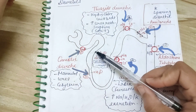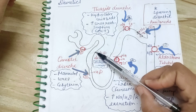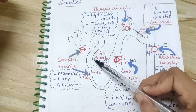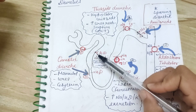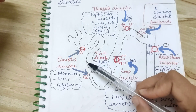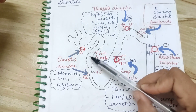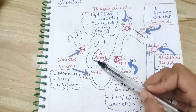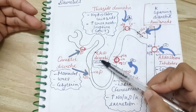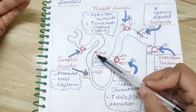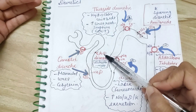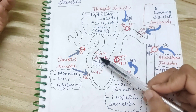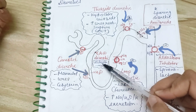Next is carbonic anhydrase inhibitor. Carbonic anhydrase is present in the PCT and it converts carbonic acid into water and CO2. Carbonic anhydrase inhibitor diuretic basically inhibits water reabsorption and sodium reabsorption. The example is acetazolamide.